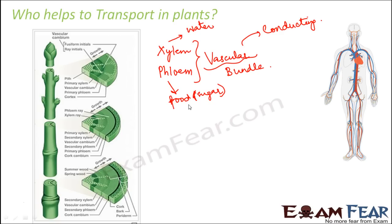If you cut a cross-section of any part of a plant — whether a stem or a root — you can see ring-like layered structures. There is secondary xylem, vascular cambium, secondary phloem, and cork cambium. Basically, the inner portion is xylem and the outer portion is phloem. They are present in a ring-like structure — a layer of xylem on the inside and a layer of phloem outside it. For more detail on xylem and phloem, refer to the previous videos.